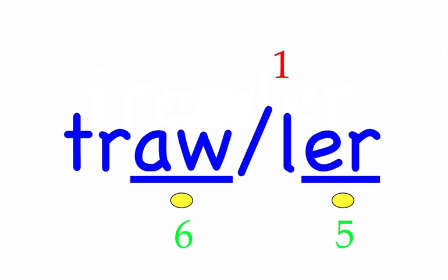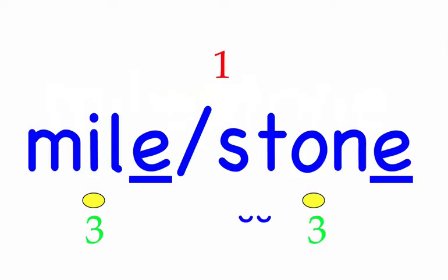Row four. Milestone. This moment is a real milestone for the organization. First syllable: mile, three sounds, M-I-L. Second syllable: stone, four sounds, S-T-O-N. Mile, stone — mark the word. We have an S-T blend; protect it by putting half circles under the S and T. Milestone is a compound word.